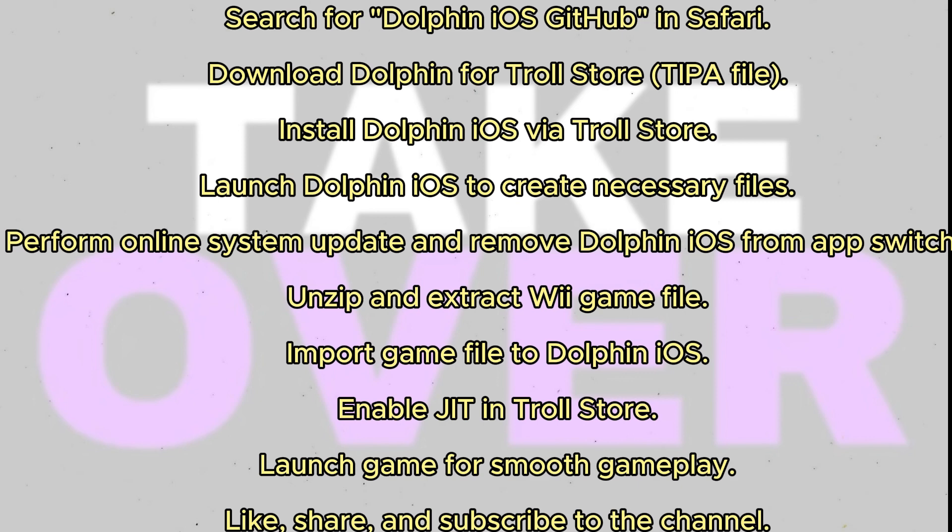First, open Safari and search for Dolphin iOS GitHub. Click on the Dolphin Reborn link, which should be the first link in the search results. Scroll down to the Releases section and click on the latest version number. Download Dolphin for TrollStore as an IPA file from the Assets section.